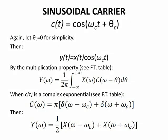When c of t is a complex exponential, then c of omega is equal to pi times the quantity delta of omega minus omega c plus delta omega plus omega c.